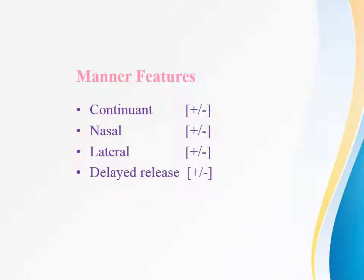Manner feature is the feature that specifies the manner of articulation. The first manner feature is continuant. This feature describes the passage of air through the vocal tract. The plus continuant segments are produced without any significant obstruction in the tract, and so the air passes through in a continuous stream. The minus continuant segments, on the other hand, have such an obstruction and occlude the airflow at some point of articulation.